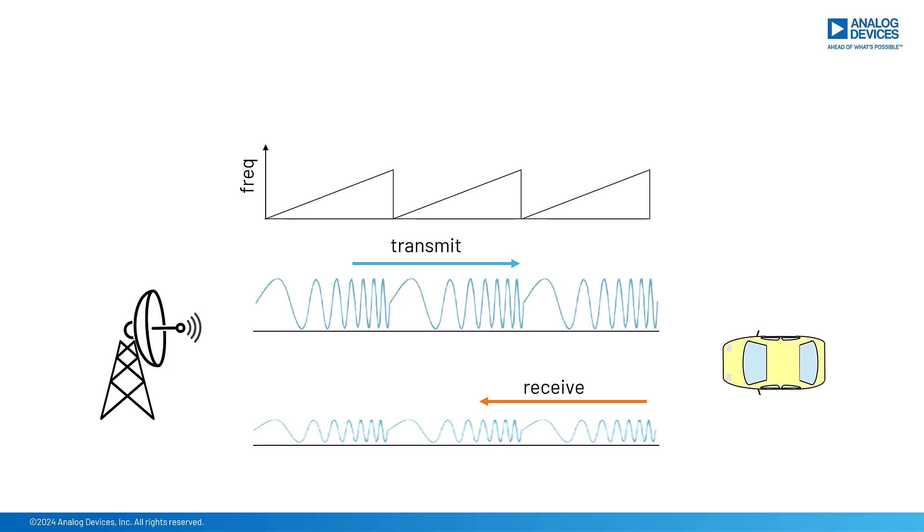Okay, so far we've been transmitting these linear frequency modulated chirps, and we're just doing that over and over and looking at the beat frequency that they produce. And that is very interesting, but it gets even more interesting if we start keeping track of the chirps. So if we number the chirps and keep track of what data we receive from each of them, then we'll be able to see how that data is changing from chirp to chirp.